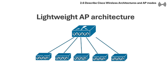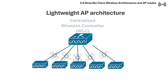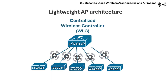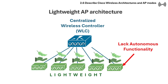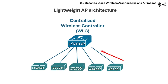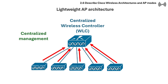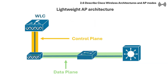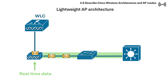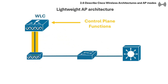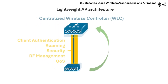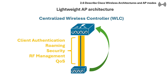The next type of architecture is the lightweight AP architecture. A lightweight access point architecture relies on a centralized wireless LAN controller, or WLC, to manage and configure access points, making them lightweight because they lack autonomous functionality. To address the scaling limitations of autonomous AP architecture, a centralized management controller was introduced. In this architecture, it separates the control and data planes of a wireless network, with the access point handling real-time data transmission and the WLC managing control plane functions, pushing configuration, security policies, client authentication, and management to the access point.